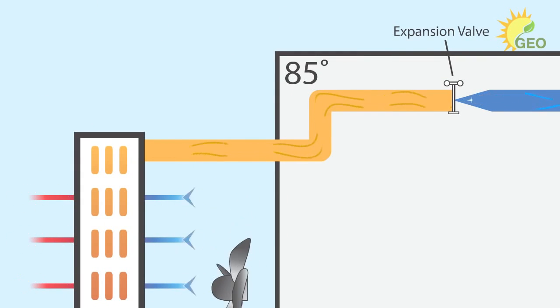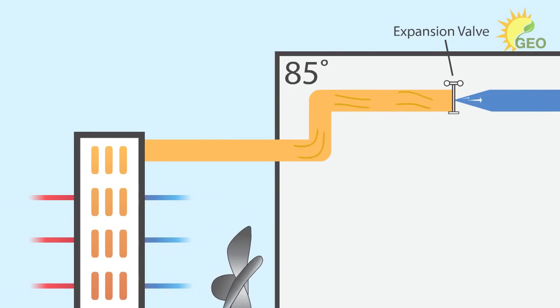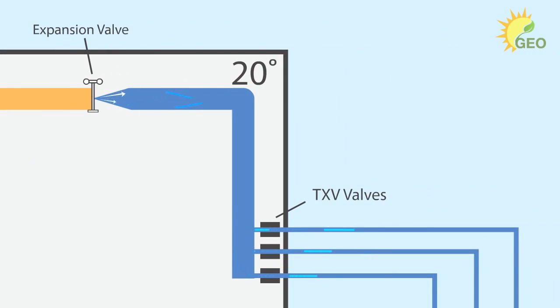As the refrigerant leaves the coil, it condenses back to its liquid state and moves toward the expansion valve at 85 degrees. The expansion valve is basically like a dam with a small hole. When the refrigerant passes through the expansion valve, the pressure rapidly decreases and the temperature falls to 20 degrees.